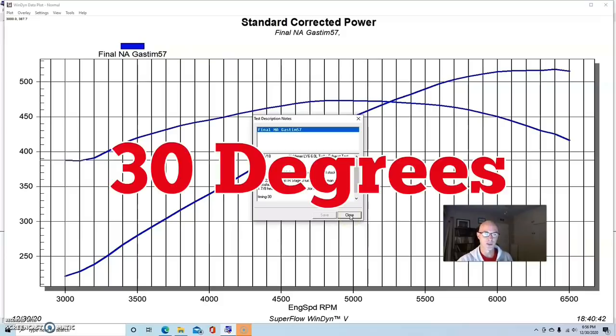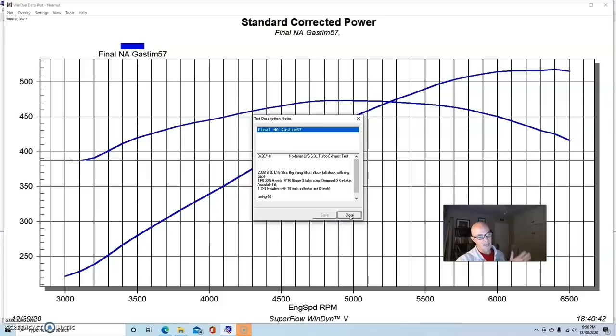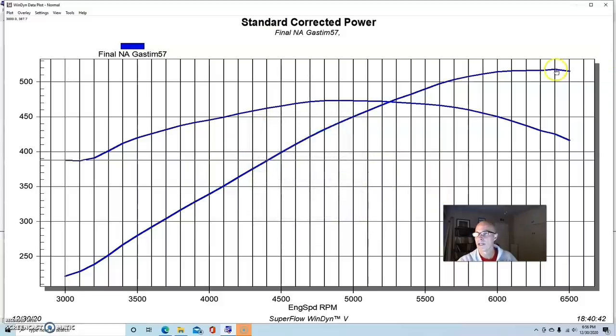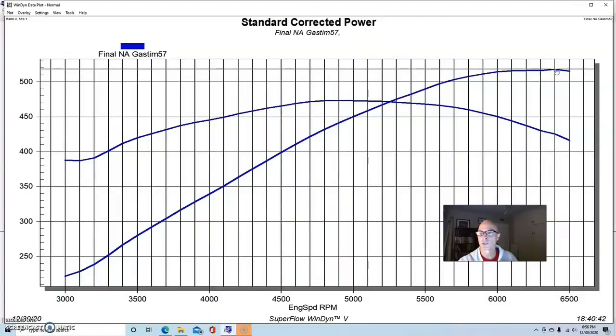We ran this thing on 91 and optimized the timing. This thing made best power at 30 degrees of total timing. We had a timing curve with less than 30 degrees down at 3000 RPM and a peak of 30. When we're tuning, we start adding timing until it doesn't make any power. It'll stop making power at lower RPMs below that 30 degree mark, then we create our curve from the tuning. It's very easy - we make a few runs and add the timing.